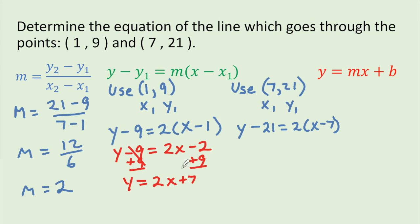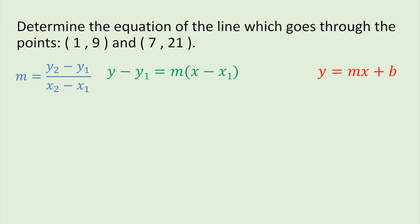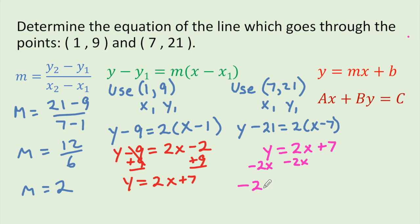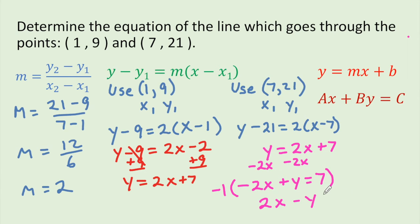Now let's convert slope-intercept form to standard form. Standard form for the equation of a line is ax plus by equals c, which means move the x and y values to the left, and constants to the right. Starting from y equals 2x plus 7, we subtract 2x from both sides to get negative 2x plus y equals 7. Since the first coefficient is not supposed to be negative, we multiply everything by negative 1, which changes all the signs, giving us our standard form.